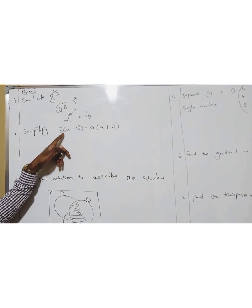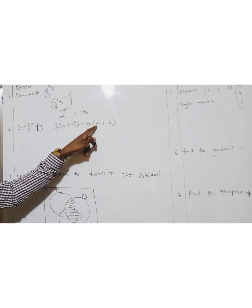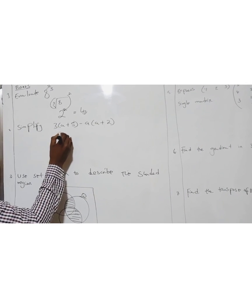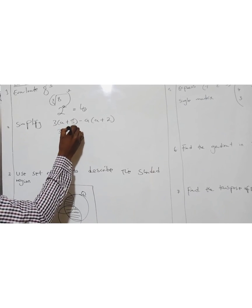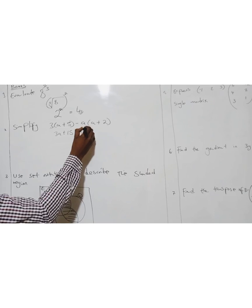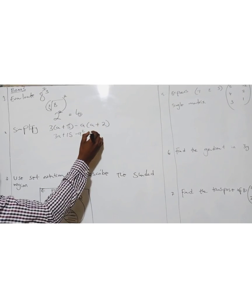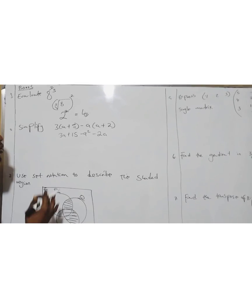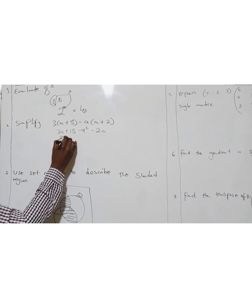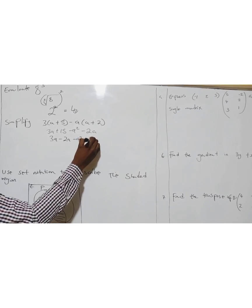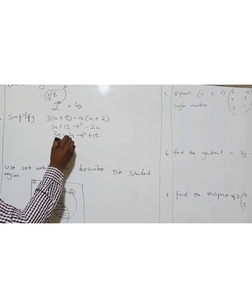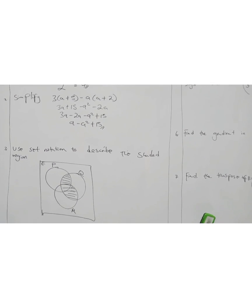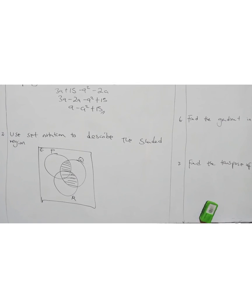Simplify 3(A + 5) minus A(A + 2). Brackets mean multiplication. So 3 times A is 3A, 3 times 5 is 15. A times A is A squared. Negative A times positive A is negative 2A. Pay attention to the negatives. You have 3A, then minus A squared plus 15. So 3A minus 2A is A minus A squared plus 15. Very easy.